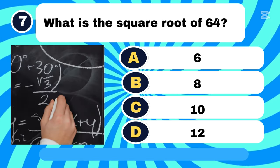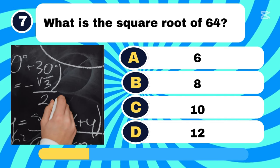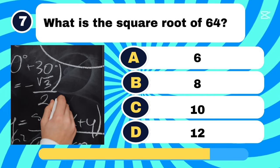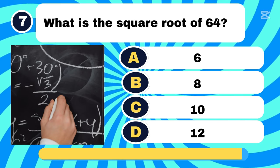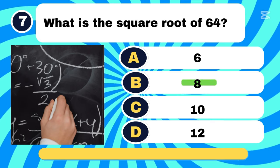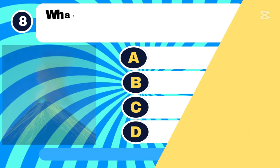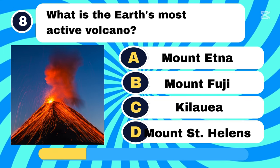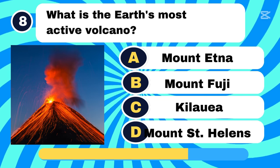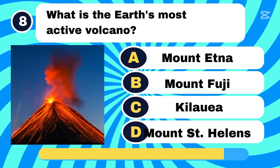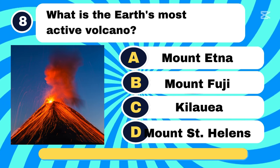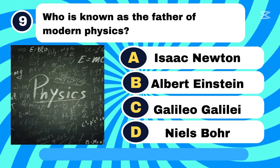What is the square root of 64? Letter B, 8. What is the Earth's most active volcano? Letter B.